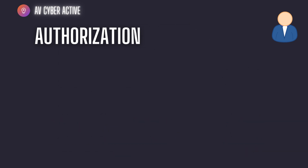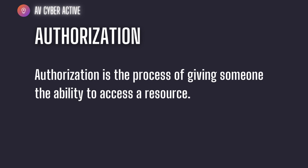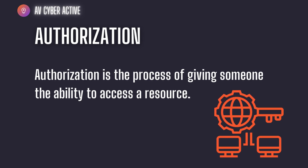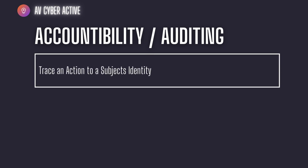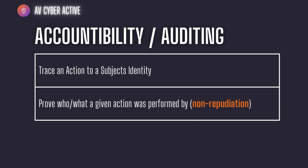The second A in IAAA is Authorization, which means you have already been identified and authenticated, and now you're let into the system. What you are supposed to access on a system — the objects you're allowed to reach — is the authorization part. The last A refers to Accountability or Auditing. This refers to tracing an action to a subject's identity. Basically, we are trying to prove non-repudiation, which means you prove what action was performed, and the person who performed it cannot deny having done so.